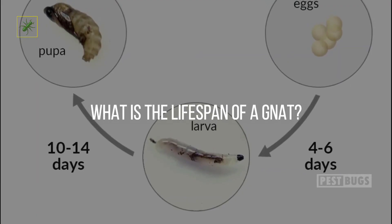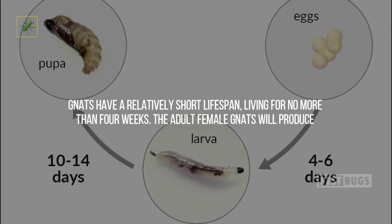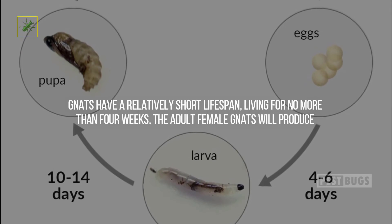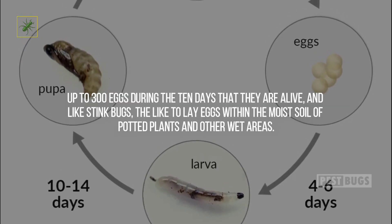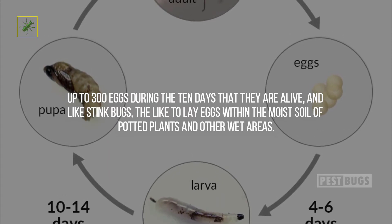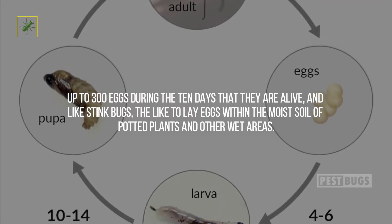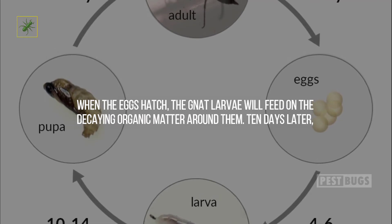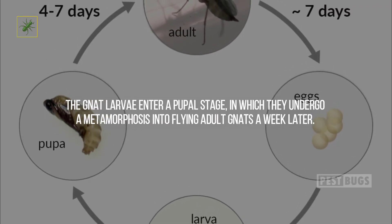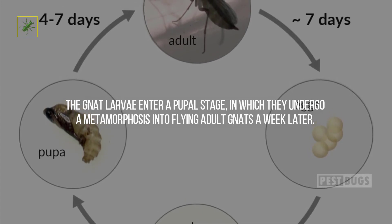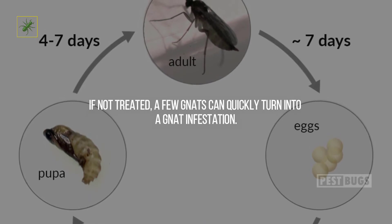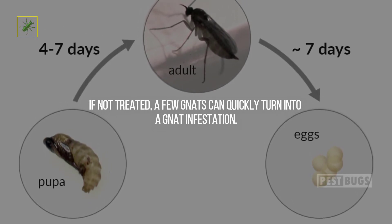Gnats have a relatively short lifespan, living for no more than four weeks. The adult female gnat will produce up to 300 eggs during the 10 days that she is alive, and like stink bugs, they like to lay eggs within the moist soil of potted plants and other wet areas. When the eggs hatch, the gnat larvae feed on decaying organic matter around them. Ten days later, the larvae enter a pupal stage, undergoing metamorphosis into flying adult gnats a week later. If not treated, a few gnats can quickly turn into a gnat infestation.